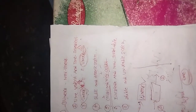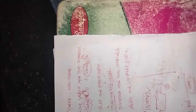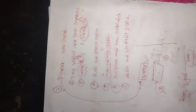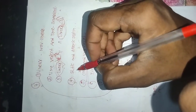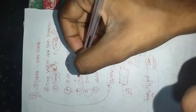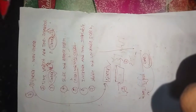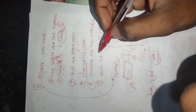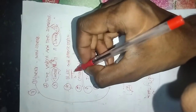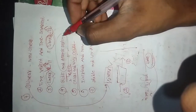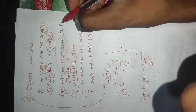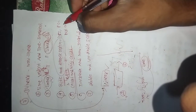For a causal system, output depends only on present and past inputs, not future values. For a static system, the output depends only on the present input. For a dynamic system, the output depends on the present input as well as past outputs.